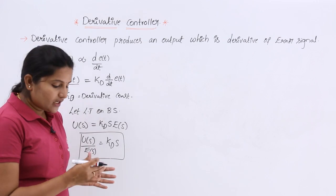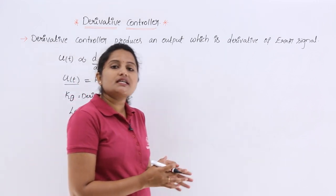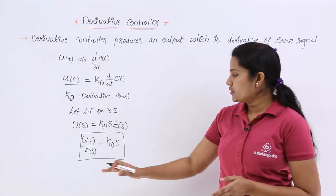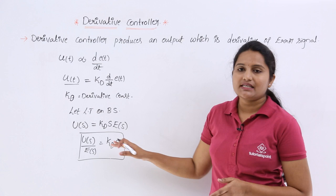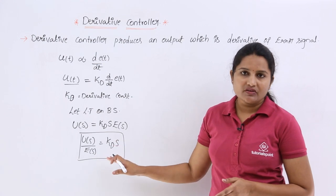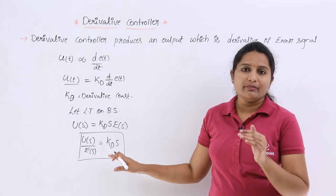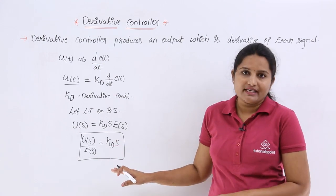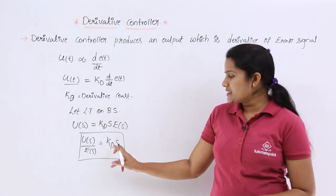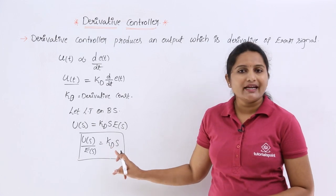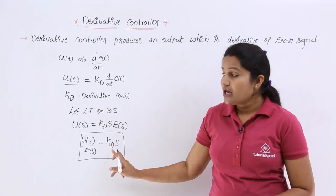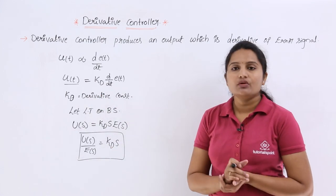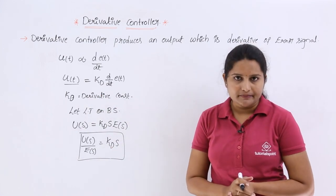This is the transfer function of the derivative controller. If anyone asks what the transfer function of a derivative controller is, you can simply say the transfer function is Kd × s, where Kd is the derivative constant.